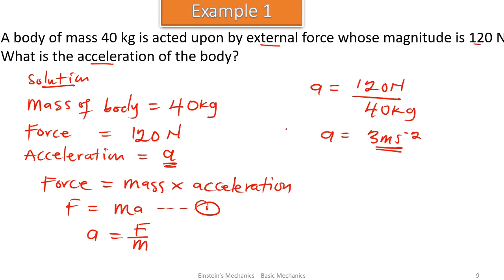So we are done with this question. The formula is F equals ma. We had our force and mass, so we made acceleration the subject and did substitution. We got 3 meters per second squared. That's the answer. Example 2.